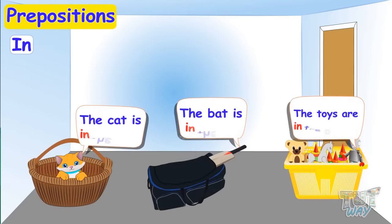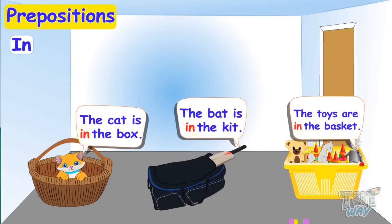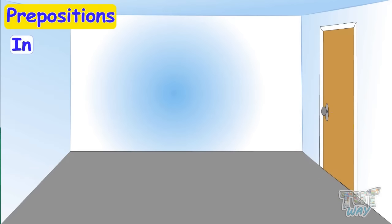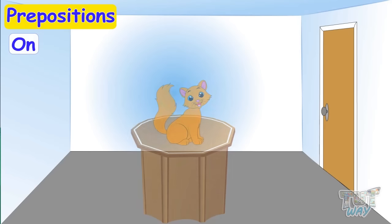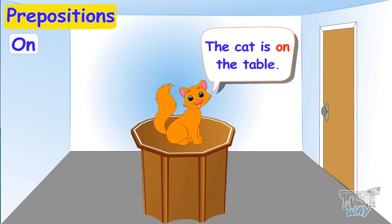So we learned in which cases we use 'in' — which position is known as 'in'. Here we have the next preposition and it is 'on'. Now we will see examples where 'on' is used. The cat is on the table.